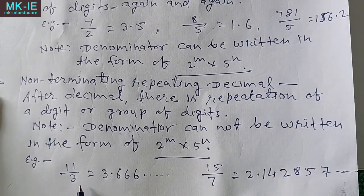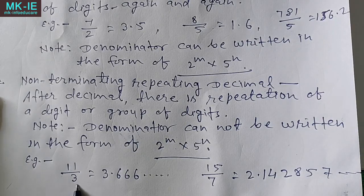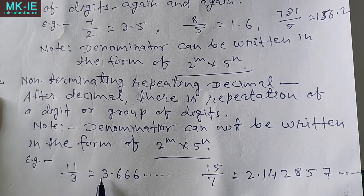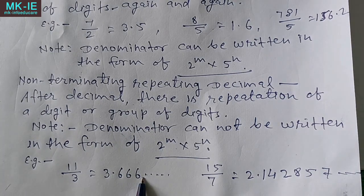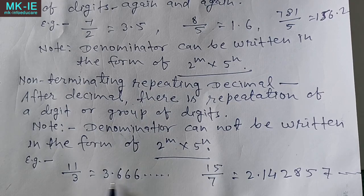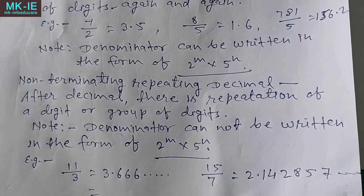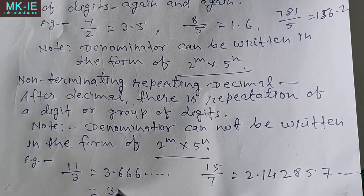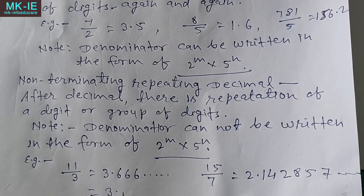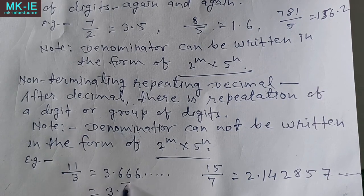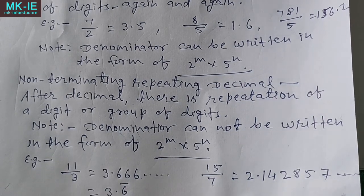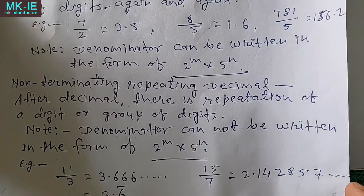जैसे example में 11 by 3 है। इसको जब हम 3 से divide करते हैं तो decimal में 3.666... आता है, मतलब 6 का repetition हो रहा है। तो यह हो गया non-terminating repeating decimal। जिस भी digit या group of digits का repetition होता है, उस digit के ऊपर हम bar लगा देते हैं। इसको recurring decimal भी कहते हैं।